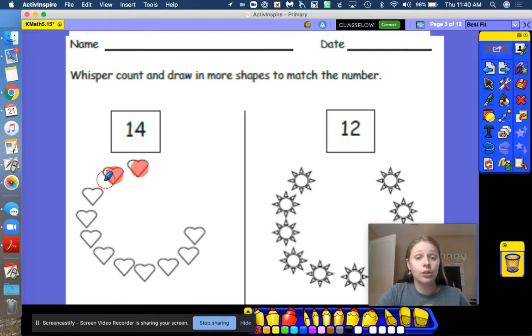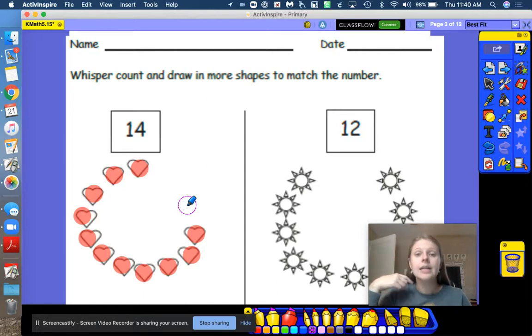Let's see how many we have. One, two, three, four, five, six, seven, eight, nine, ten, eleven. I have eleven. Now we need to keep counting until we get to fourteen. So start at eleven, stop at fourteen. Ready? Eleven, twelve, thirteen, fourteen. Now we have fourteen hearts. Eleven plus three equals fourteen. Great job.